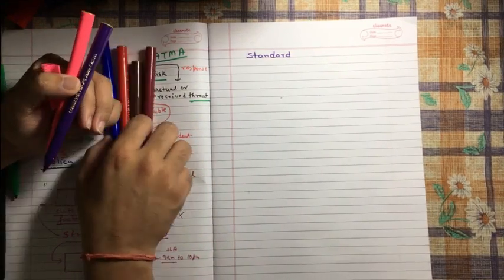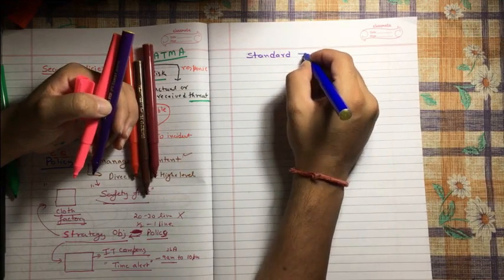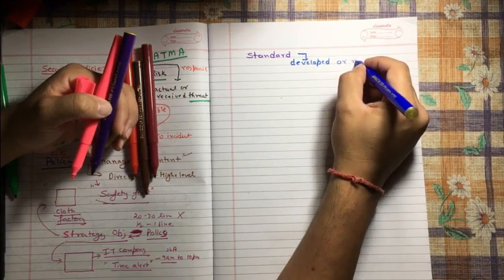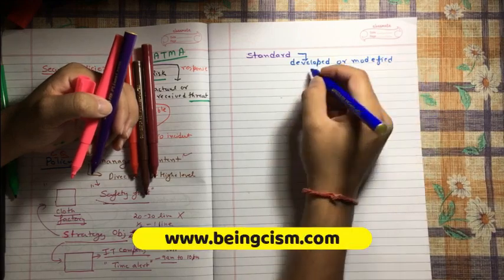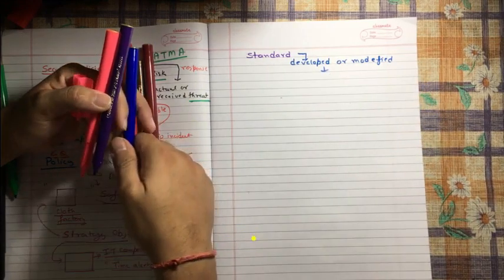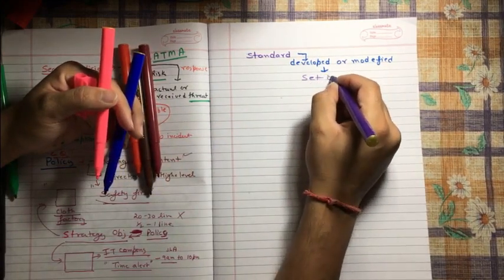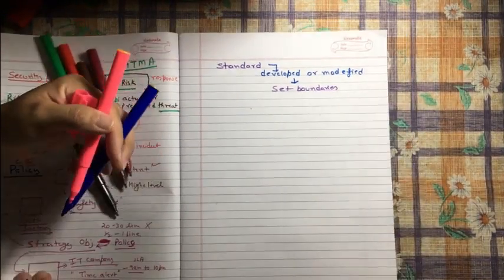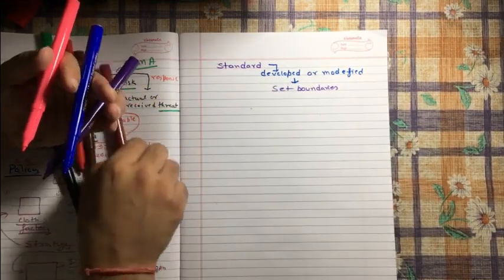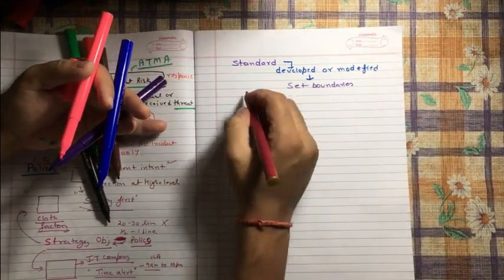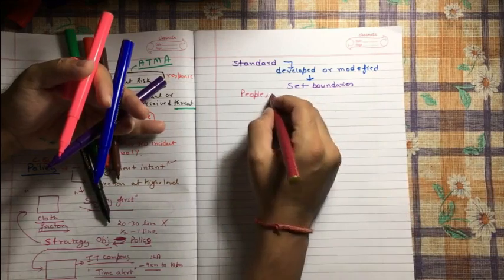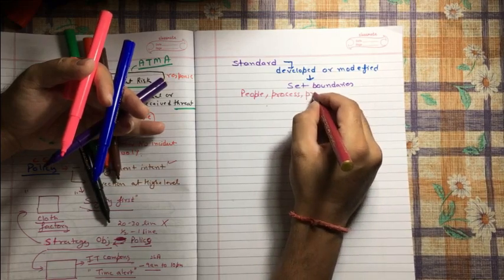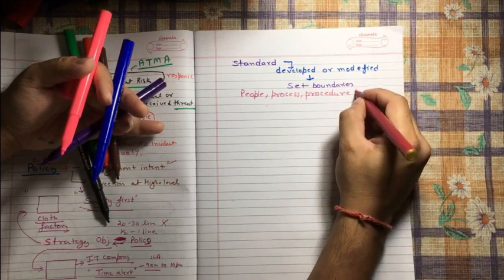So basically friends, standards are developed or modified to set boundaries. To set the boundaries for whom? For people. Let me just write in. For people, process. I will explain. I am just trying to write the definition first, then I will explain all these things in detail. Procedure and technology.